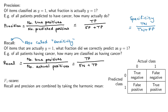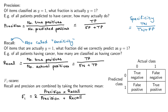In the machine learning world, we often look at precision and recall to gauge system performance. It's still useful to have a single metric to compare model A to model B, and for that we use the F1 score, which is the harmonic mean of recall and precision. Let's intuitively see what the F1 score gives you.